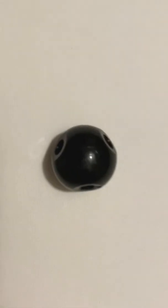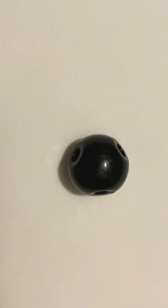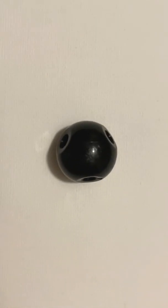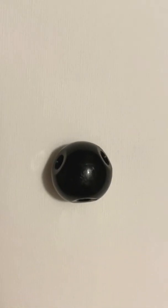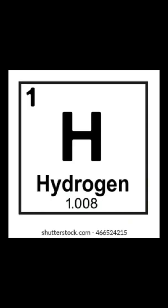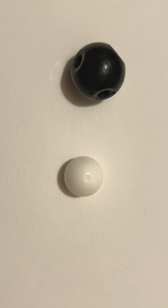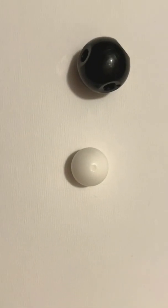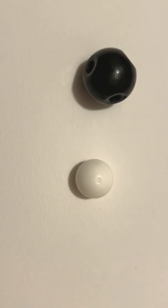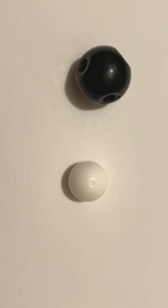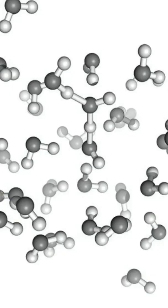For this series, we're going to be representing carbon atoms as black spheres. Another important atom in organic chemistry is hydrogen, and in this series we're going to be representing hydrogen with the white sphere. With just these two atoms alone, we can make countless organic molecules.